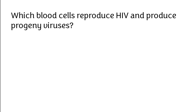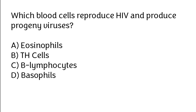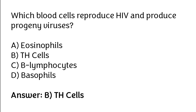Which blood cells reproduce HIV and produce progeny viruses? Eosinophils, TH cells, B lymphocytes, basophils. The correct answer is option B: TH cells.